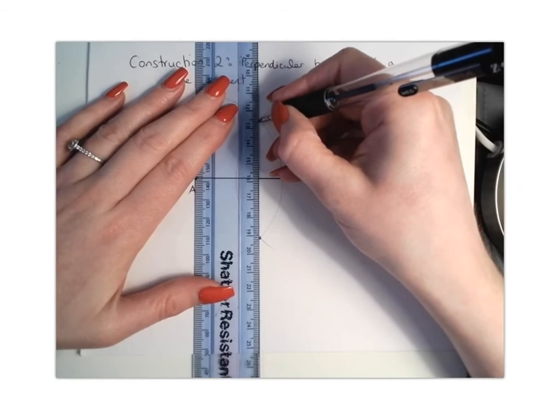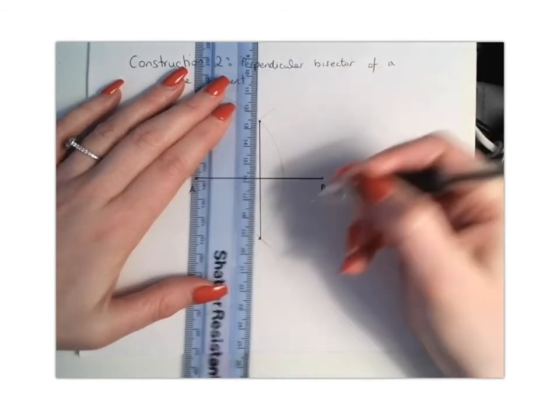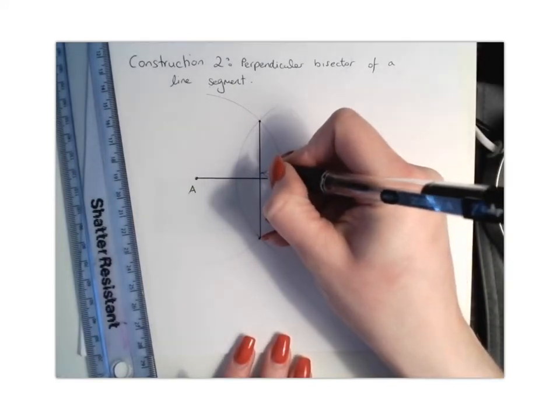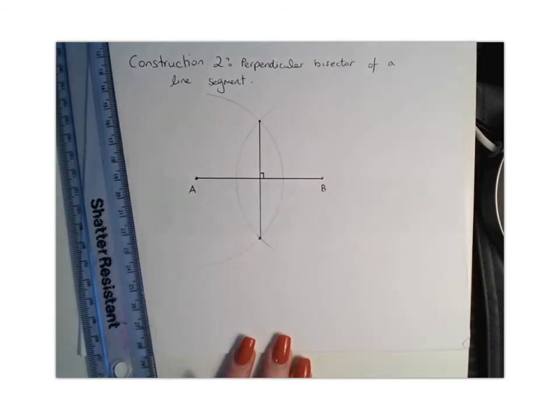And what you will have done is created the perpendicular bisector of your line segment AB, and this line will be meeting your line segment AB at 90 degrees.